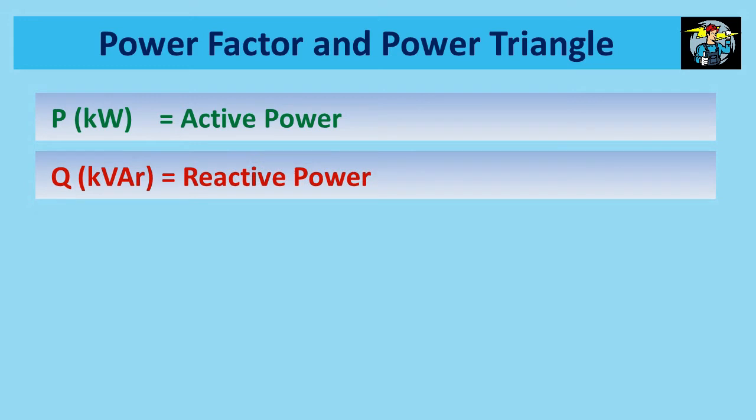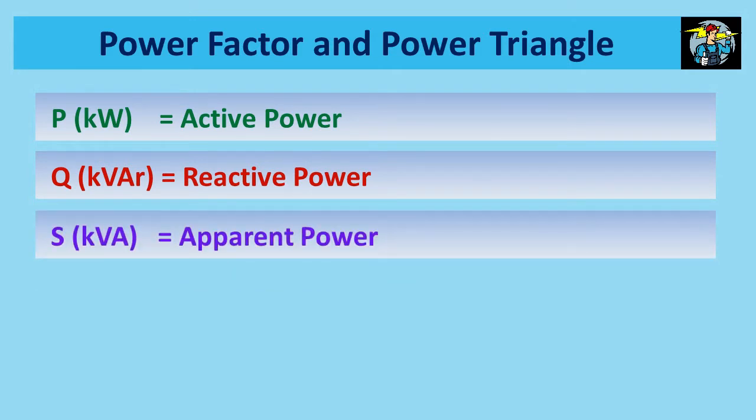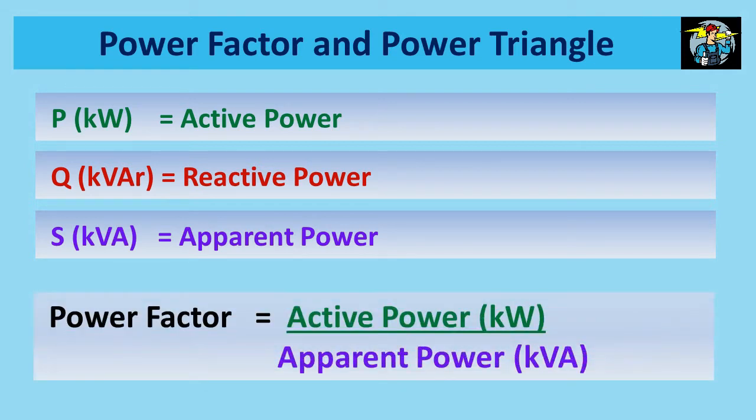Initially we need to know the power types involved in electrical equipment. First is active power denoted by P and measured in kilowatts. Second is reactive power denoted by Q and measured in kVAr. The R after KVA shows it is reactive power. Third is apparent power denoted by S and measured in kilovolt ampere. Then you get this equation: power factor equals active power divided by apparent power. This shows that active power is part or factor of the apparent power. When the two powers are with same value the factor becomes one.